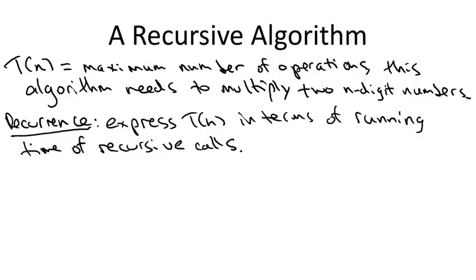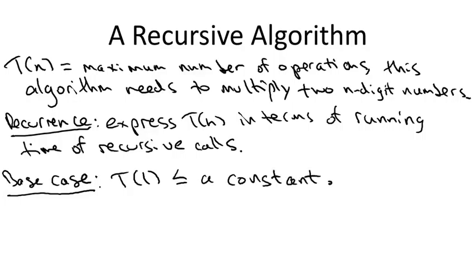Every recurrence has two ingredients. First of all, it has a base case describing the running time when there's no further recursion. In this integer multiplication algorithm, like in most divide and conquer algorithms, the base case is easy. Once you get down to a small input, in this case two one-digit numbers, then the running time is just constant. All you do is multiply the two digits and return the result. So I'm going to express that by declaring that T(1), the time needed to multiply one-digit numbers, is bounded above by a constant. I'm not going to bother to specify what this constant is. It's not going to matter for what's to follow.